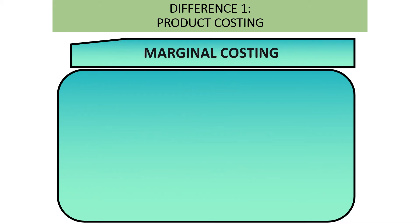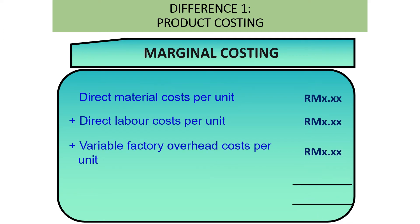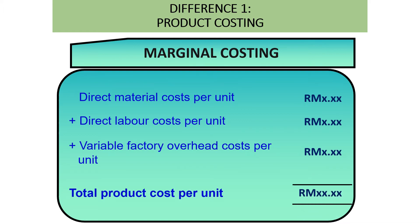Under marginal costing, the product cost per unit includes only direct material cost per unit, direct labor cost per unit, and variable factory overhead cost per unit as the total product cost per unit — meaning only variable manufacturing costs are considered as the total product cost.